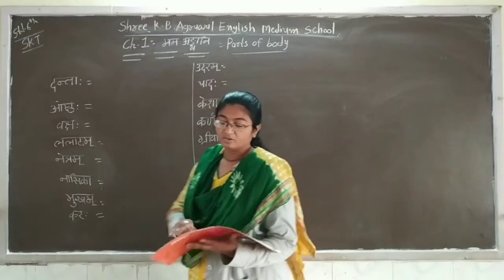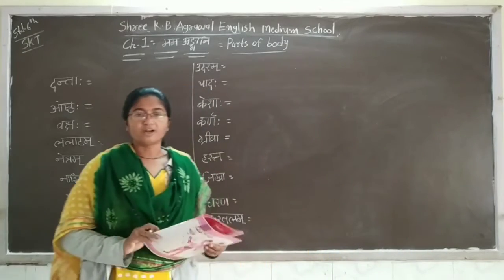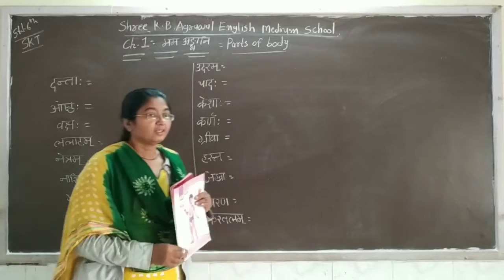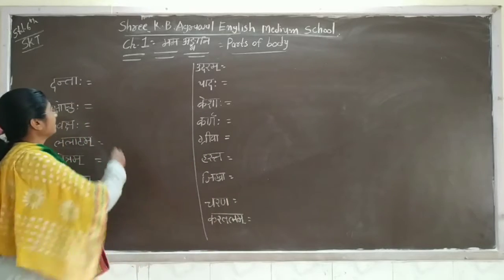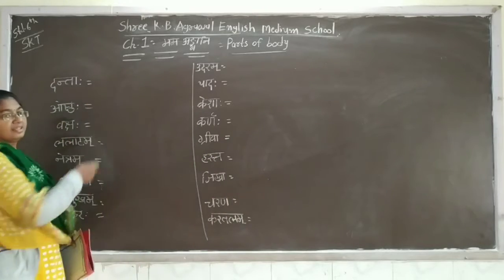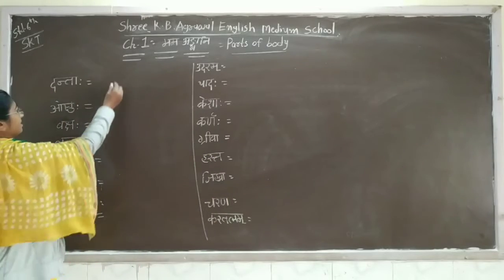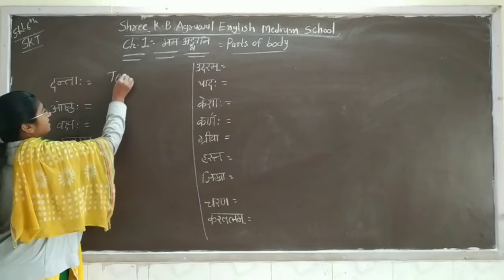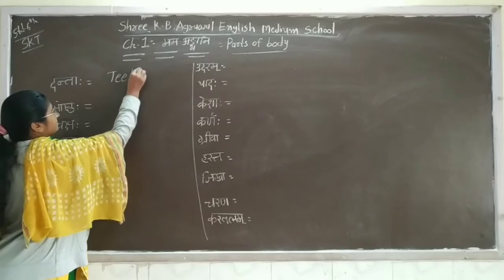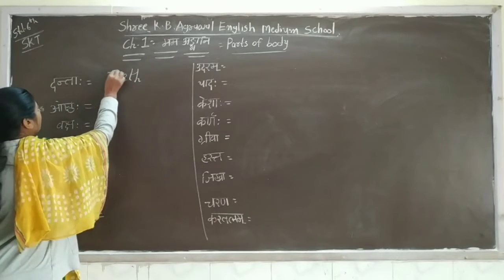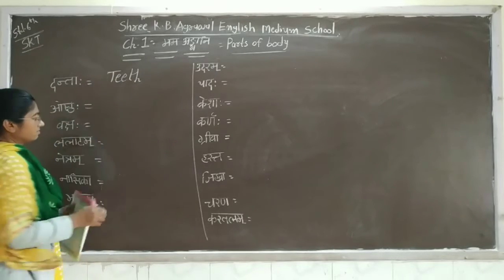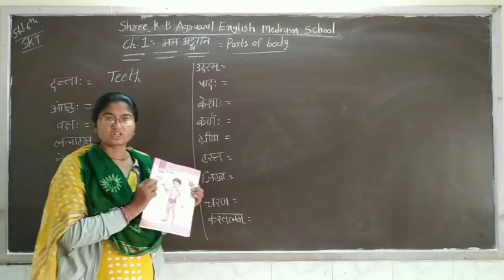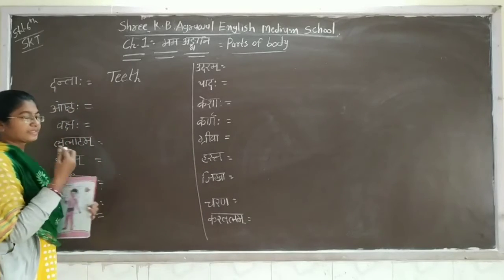So here is Danta. We can understand the English meaning. Danta means teeth. Then Oost. Here is Oost. Oost means lips.